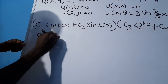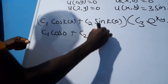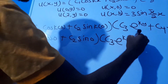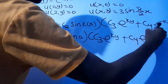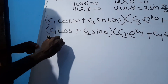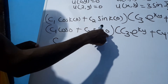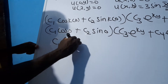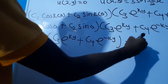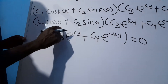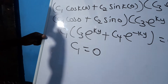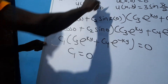This simplifies to c1·cos(0) + c2·sin(0), times c3·e^(ky) + c4·e^(-ky), equal to zero. Since cos(0)=1 and sin(0)=0, dividing both sides by c3·e^(ky) + c4·e^(-ky), we get c1 = 0.